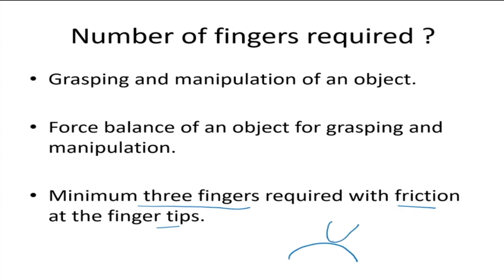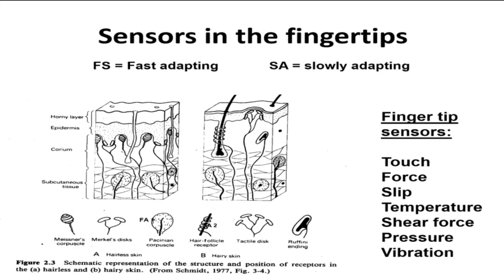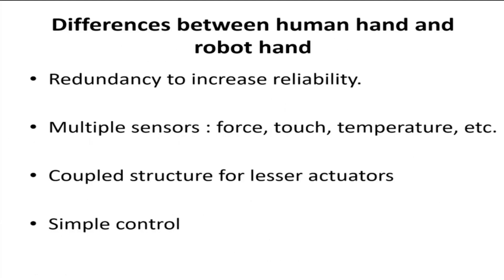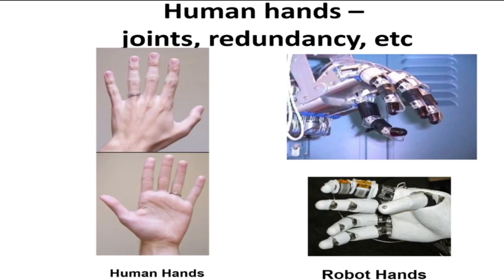Three fingertip contacts with friction can support three forces and three moments, making three fingers the minimum for grasping. In the human hand, the index finger, middle finger, and thumb are the primary grasping fingers; the remaining two provide support. Unlike humans, robot fingers typically lack the rich sensor arrays—force, touch, temperature—found in human fingertips, which is why robots struggle to manipulate objects the way humans do.